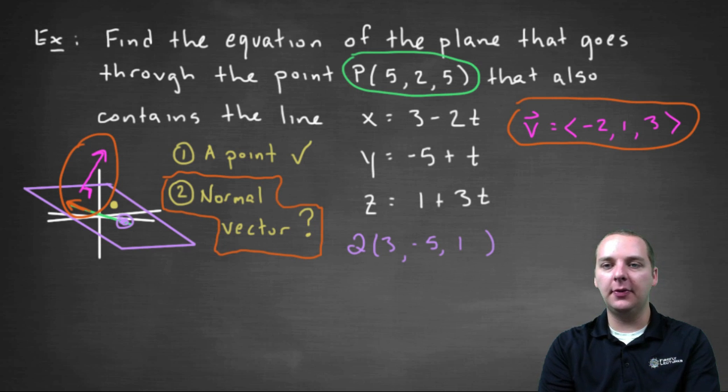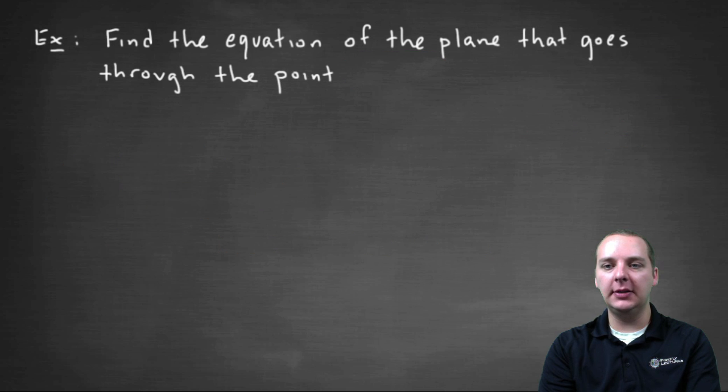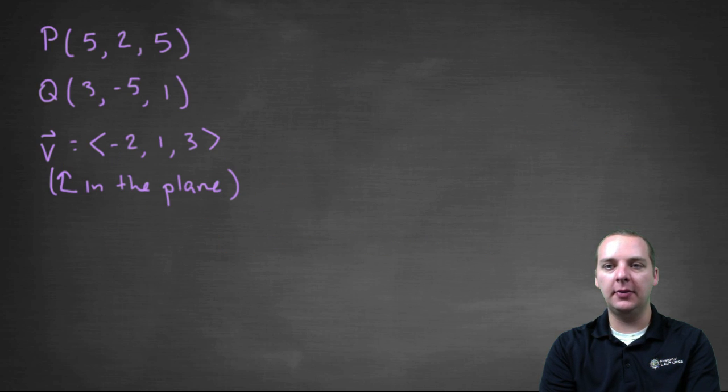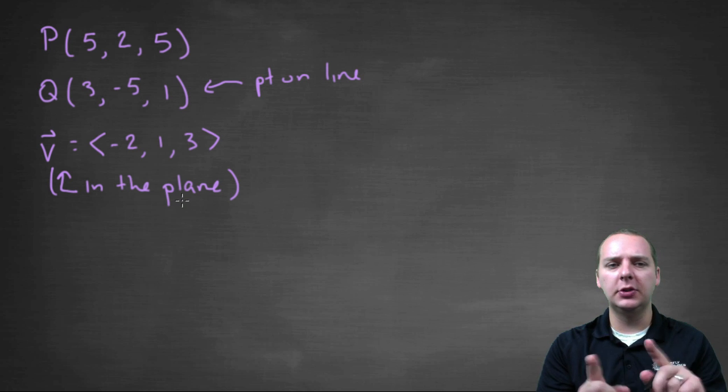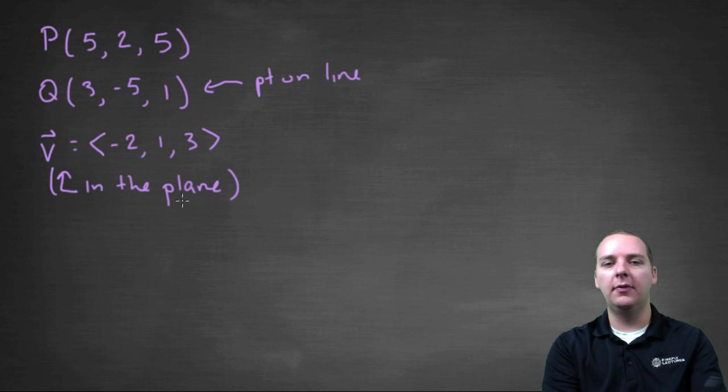Alright, so let me get rid of some of this stuff here and make some space so we can write a few things down. So here I've copied a few of the things down. The point P was the (5,2,5) point that was provided. The (3,-5,1) point was a point on the line. And then we have the vector v here, (-2,1,3), and that was the vector that was in the plane. So let's also make sure we're keeping straight points versus vectors.